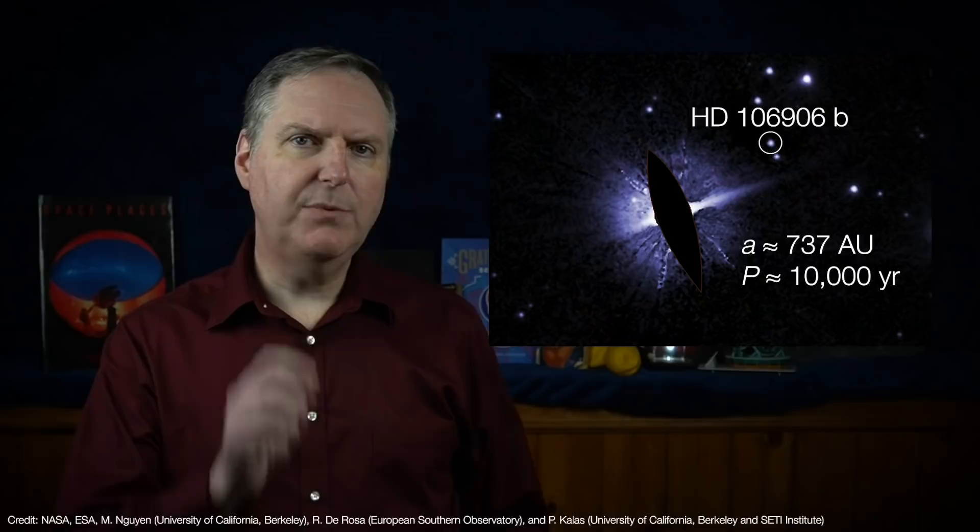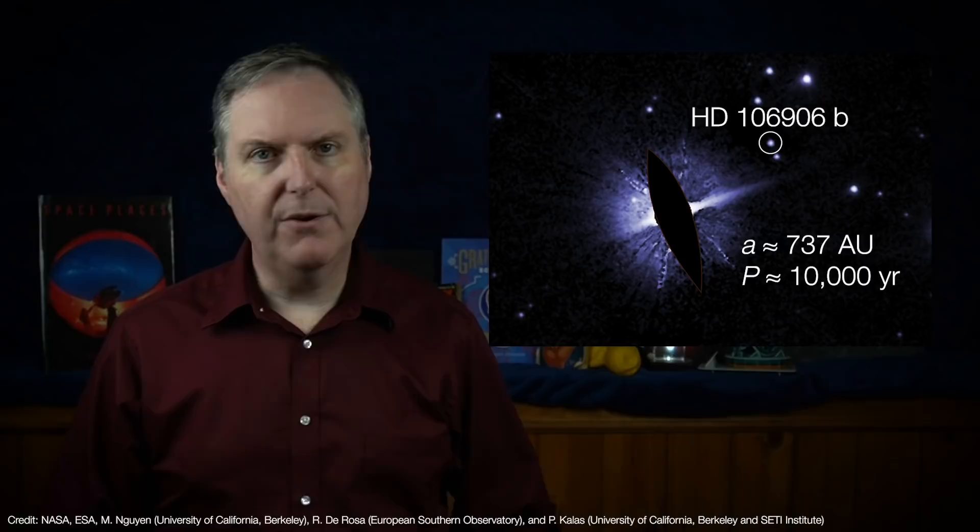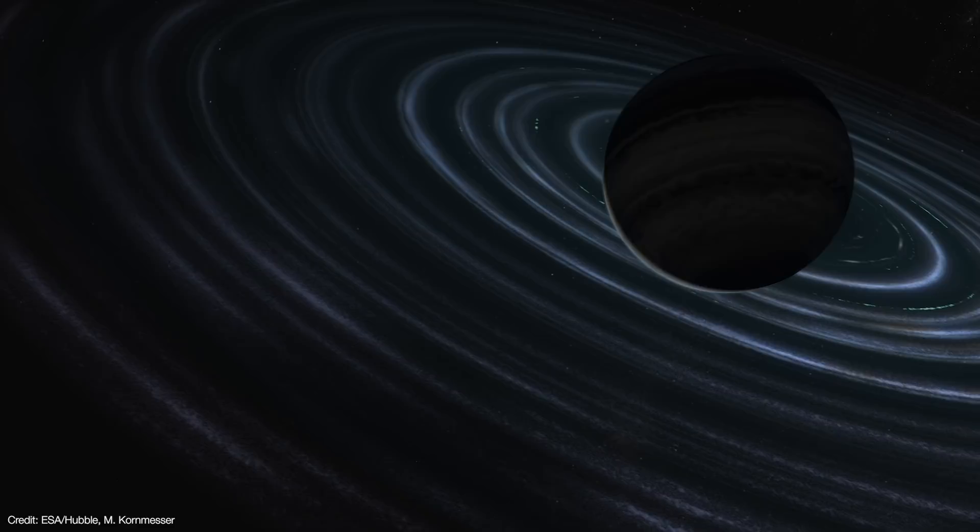A team of astronomers used archival data taken by Hubble to make precise measurements of the planet's motion over a 14-year period. From those measurements, they were able to come up with a range of possible orbits that fit the observations. They found that the allowed orbits would have to be fairly elongated or eccentric, and those orbits would also have to be inclined anywhere from 35 to 68 degrees above the plane of the disk.